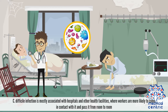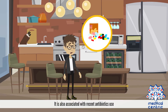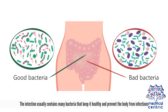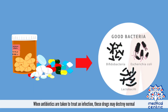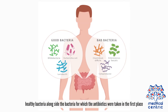Clostridium difficile infection is mostly associated with hospitals and other health facilities, where workers are more likely to come in contact with it and pass it from room to room. It is also associated with recent antibiotic use. The intestine usually contains many bacteria that keep it healthy and prevent the body from infections. When antibiotics are taken to treat an infection, these drugs may destroy normal, healthy bacteria alongside the bacteria for which the antibiotics were taken in the first place.